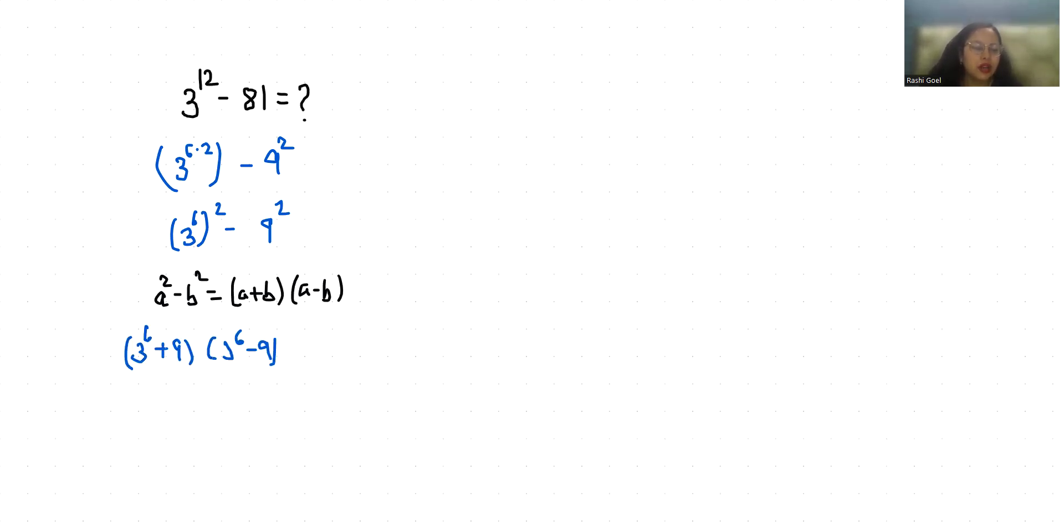729 plus 9 is 738 and 729 minus 9 is 720. So this I can break it as 700 plus 38 times 700 plus 20.